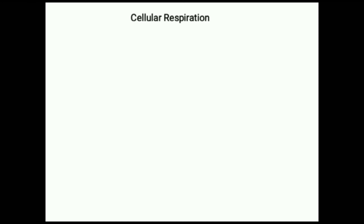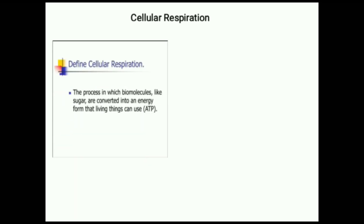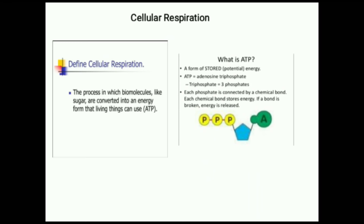The next topic is cellular respiration. It is the process in which biomolecules like sugar are converted into an energy form that living things can use — ATP, or adenosine triphosphate. Triphosphate means three phosphates. See the diagram showing the three phosphates. Each phosphate is connected by a chemical bond, and each chemical bond stores energy. If a bond is broken, energy is released.